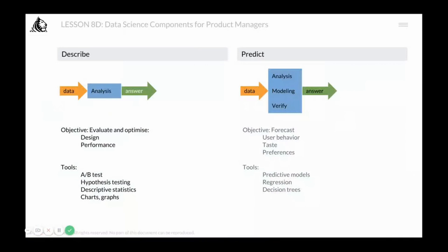While in predictive, you are trying to predict what can happen. In descriptive, you take the data, do some analysis, and get the answer.